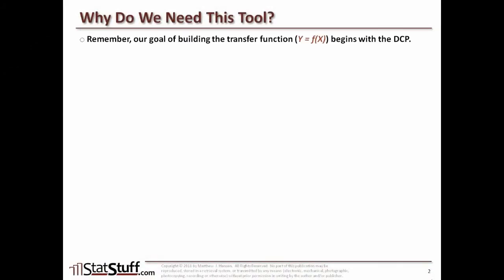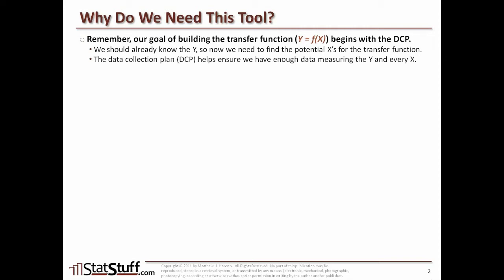Remember, what we're trying to do here is to build the transfer function — that's the y equals f of x. In order to do that we have to begin with trying to build the data collection plan, or the DCP. So we should already know what the project Y is, and now we need to find out what are those potential X's for that transfer function. The data collection plan is going to help us ensure that we have enough data for measuring that Y and every one of those X's within the transfer function.